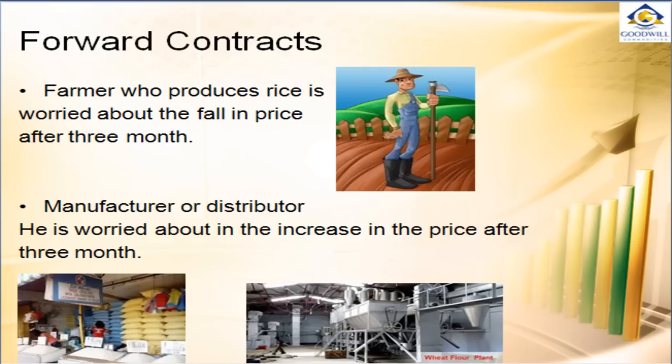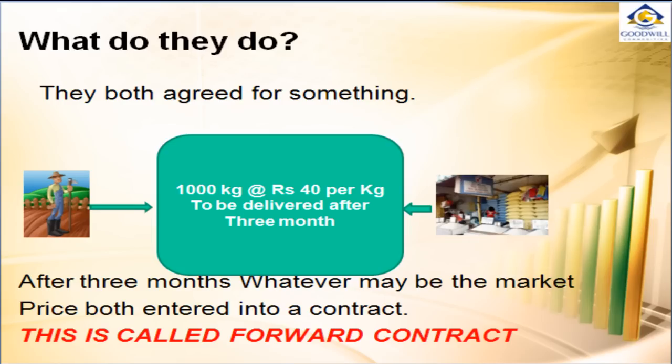A farmer should be worried about the fall in price, because the price should not fall below his production cost if he is ready to harvest after 3 months. A manufacturer or distributor should be worried about the increase in price, because he needs to purchase goods before the price increases so that he can fix a considerable margin for profit.